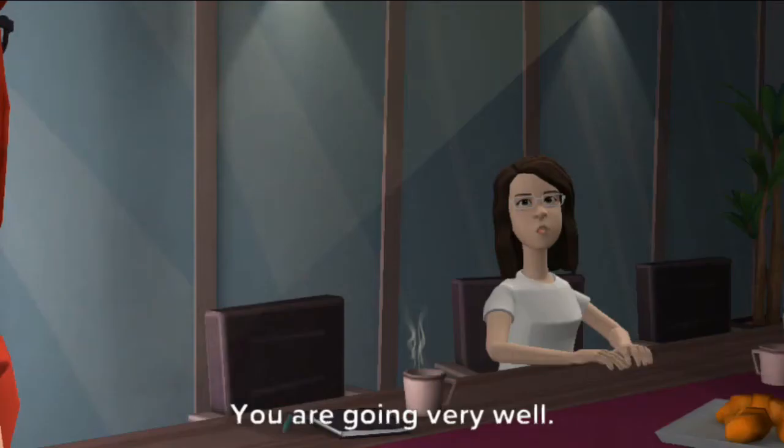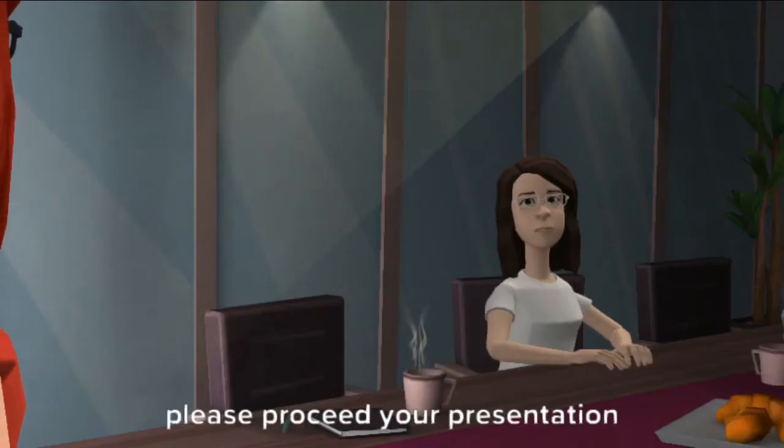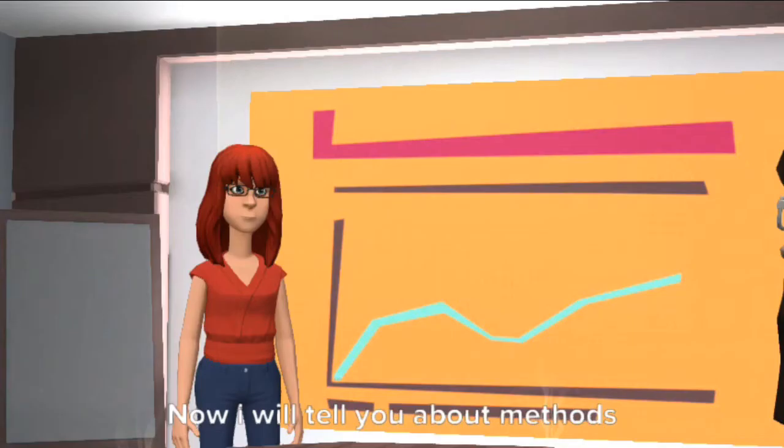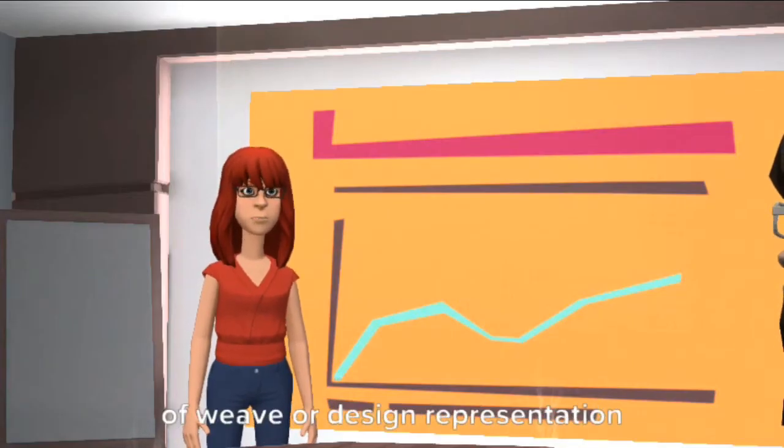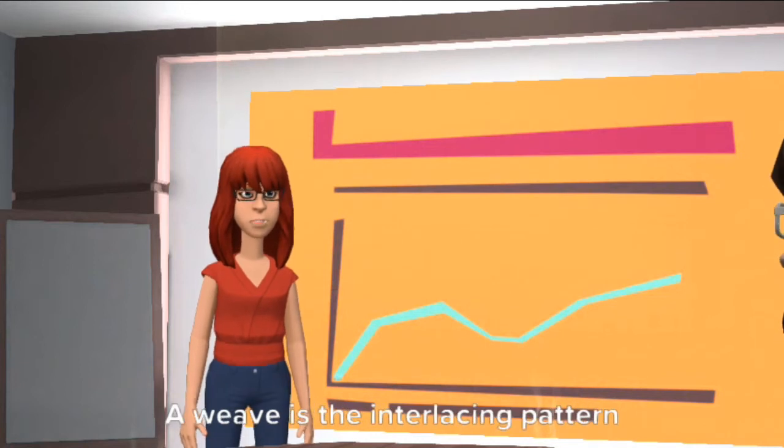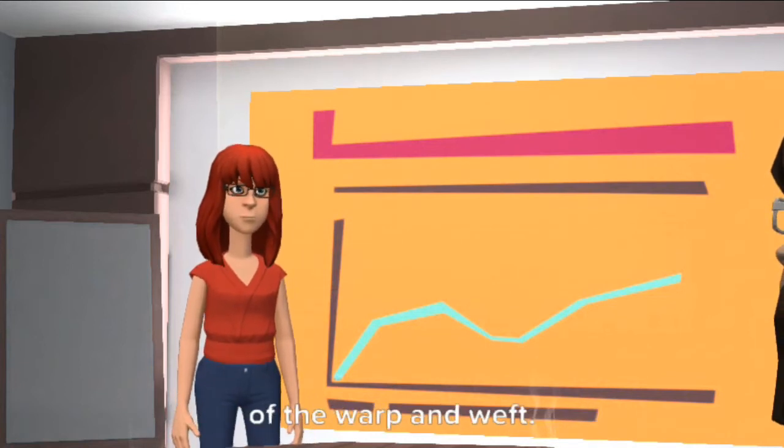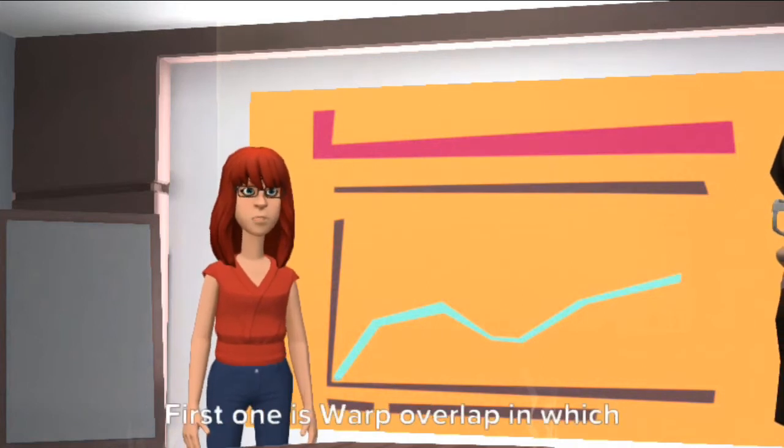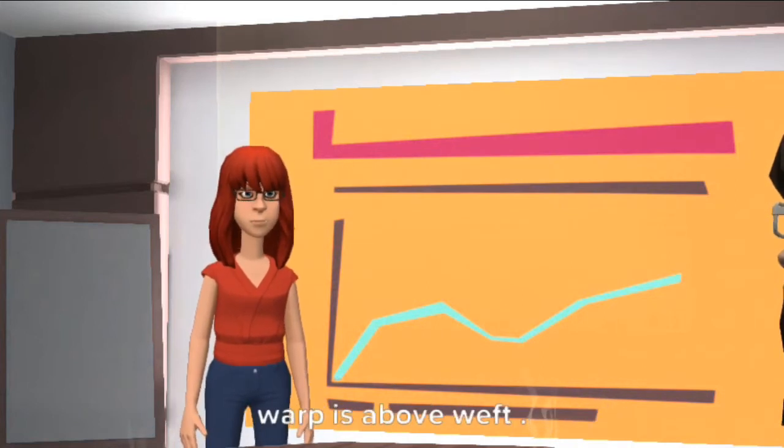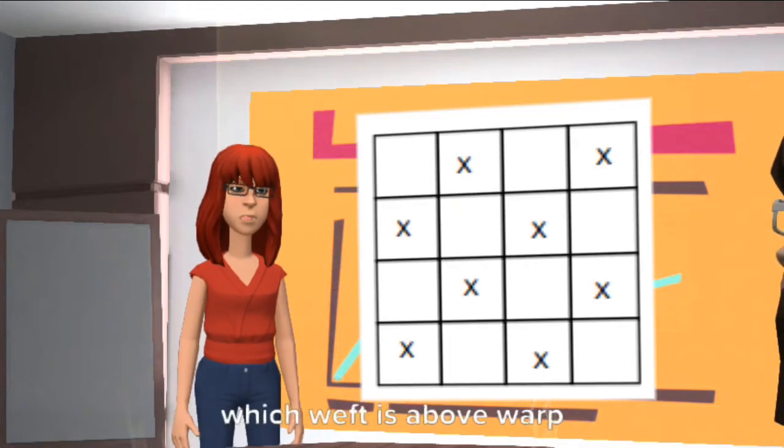You are going very well, please proceed with your presentation. Now I will tell you about methods of weave or design representation. A weave is the interlacing pattern of the warp and weft. Two kinds of interlacing are possible: first one is warp overlap, in which warp is above weft, and second one is weft overlap, in which weft is above warp.